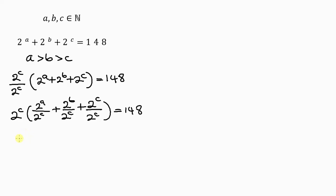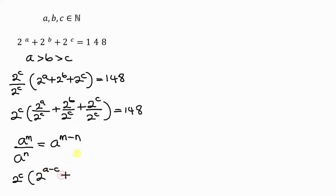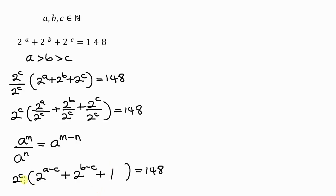Now we apply the power law of indices: a^m / a^n = a^(m−n). This gives us 2^c × (2^(a−c) + 2^(b−c) + 2^(c−c)) = 148. Since c − c = 0 and 2^0 = 1, this simplifies to 2^c × (2^(a−c) + 2^(b−c) + 1) = 148.